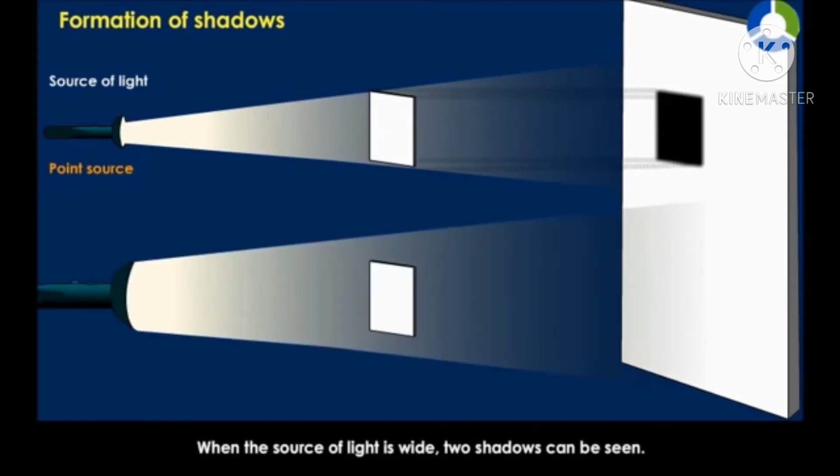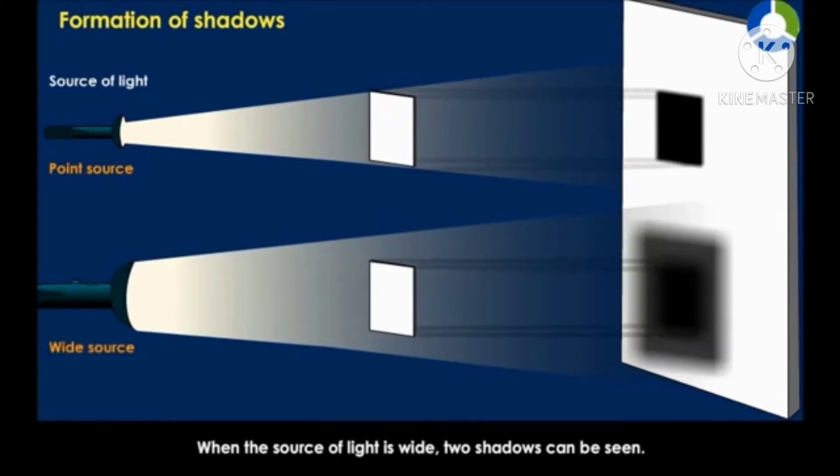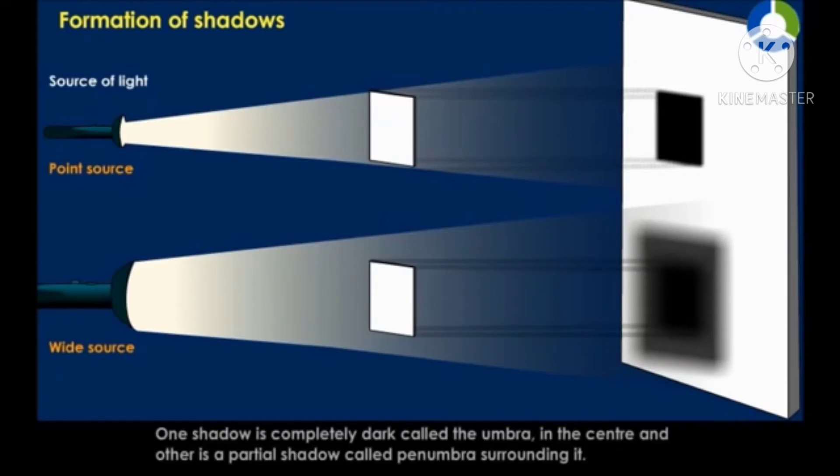When the source of light is wide, two shadows can be seen. One shadow is completely dark called the umbra in the center, and the other is a partial shadow called penumbra surrounding it.